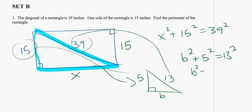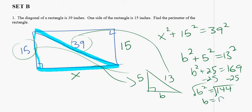And if I do b squared plus 25 equals 169, subtract 25 from each side, you get b squared equals 144. So b equals the square root of 144, which is 12.